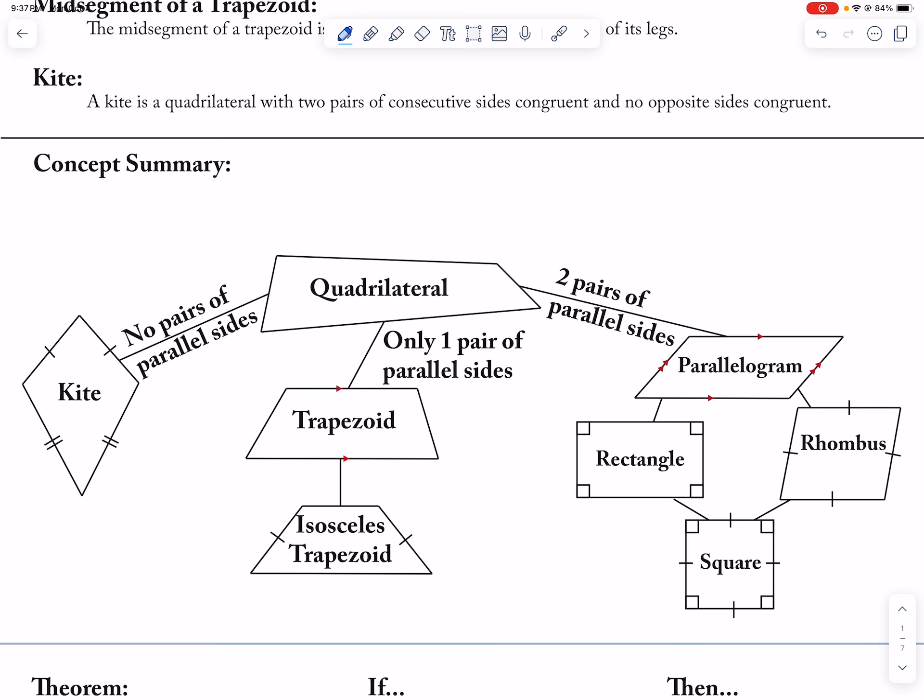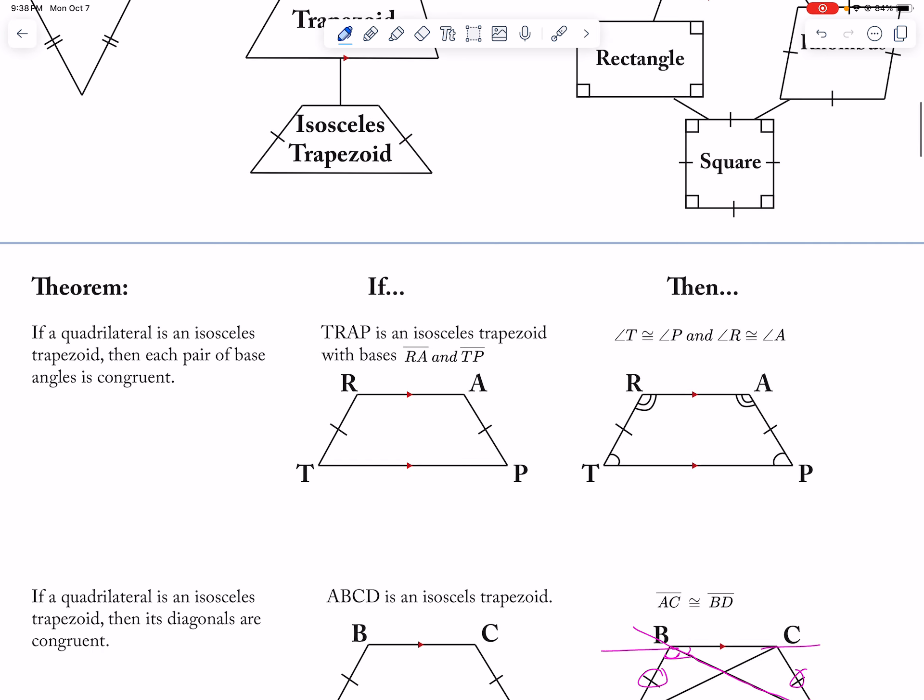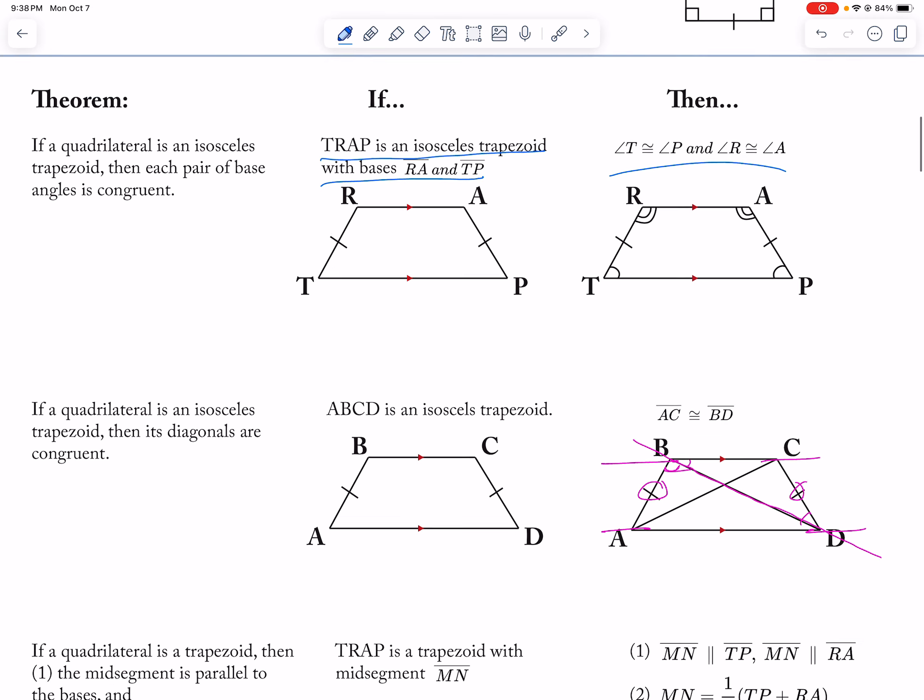And then just so that you guys could see, like, what's a kite, what's a quadrilateral, what's a parallelogram, what's a rhombus. And then there's some theorems like if the trapezoid is an isosceles, then the base angles are congruent.